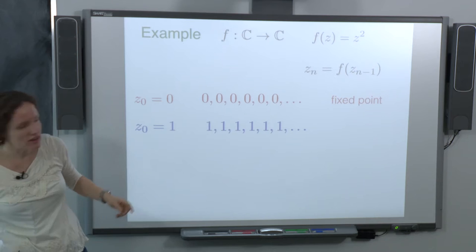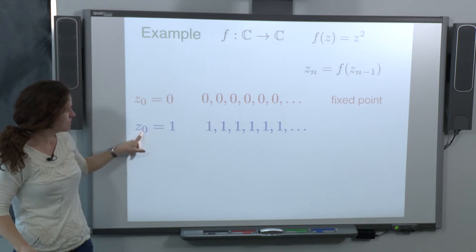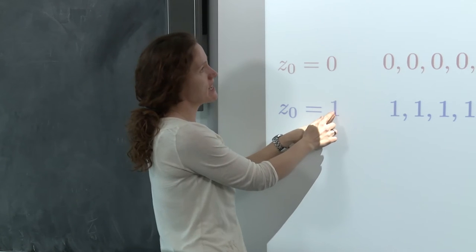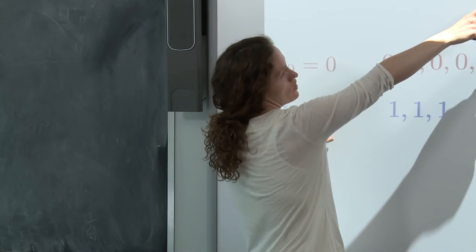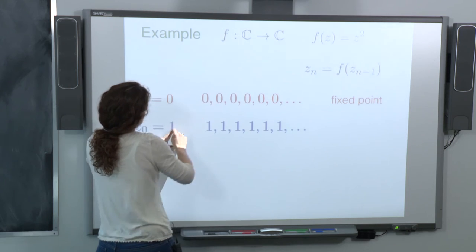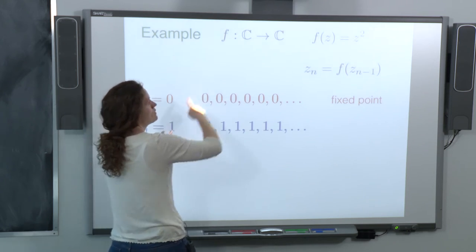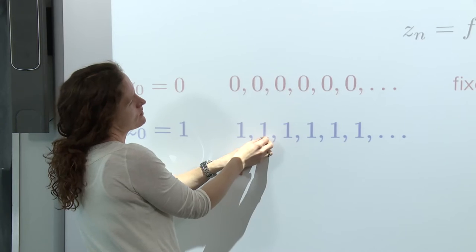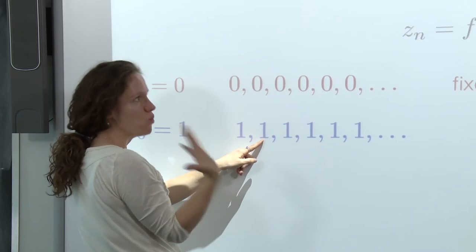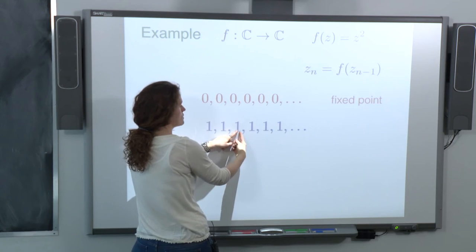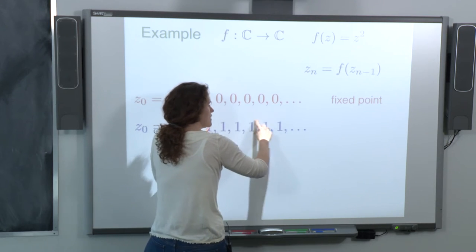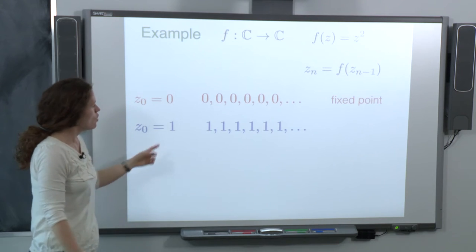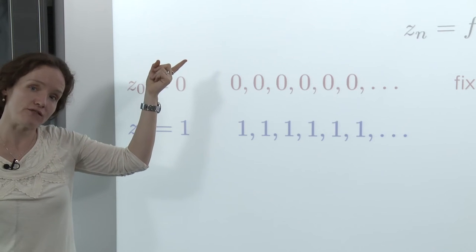I can change the initial point. Starting at 1 and plugging it into z squared: we get 1 squared back, which is 1; plug it in again, we get 1 squared back. So again, this is a boring sequence — just a sequence of 1s. The point 1 is also a fixed point of this function.